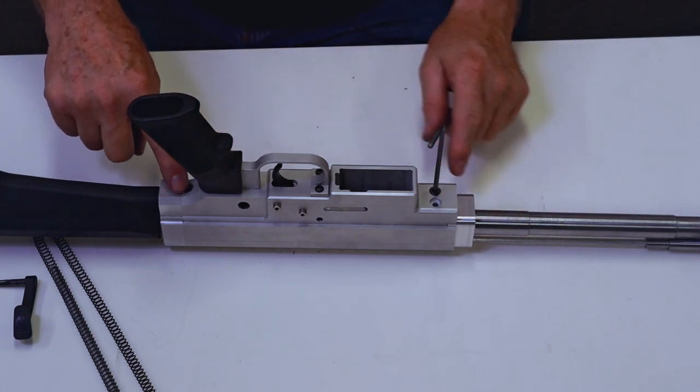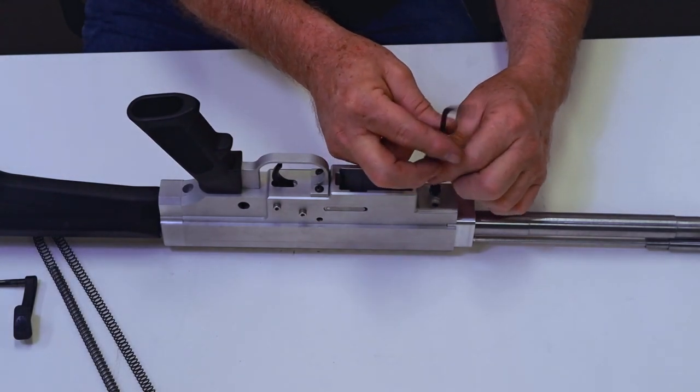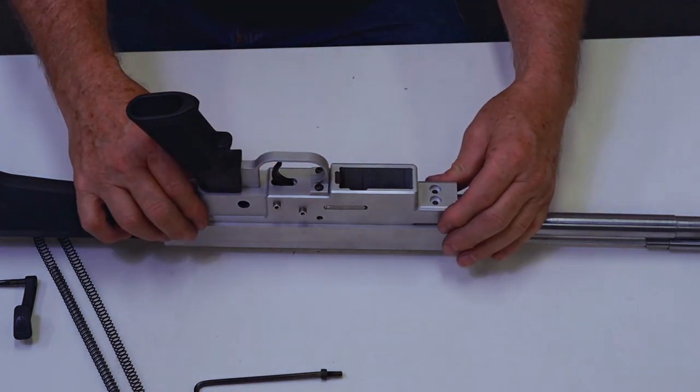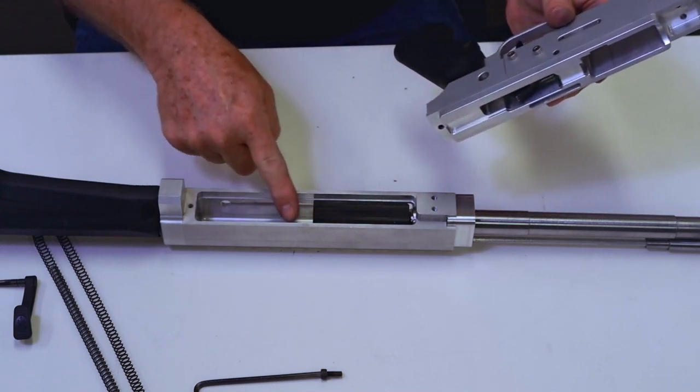There's three screws. There's one there and two there, so I've already taken two out to save time. This assembly is keyed in, so it's a neat fit. As you can see, this goes inside there.